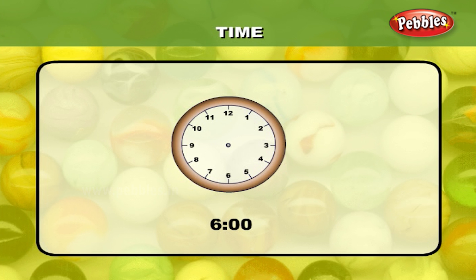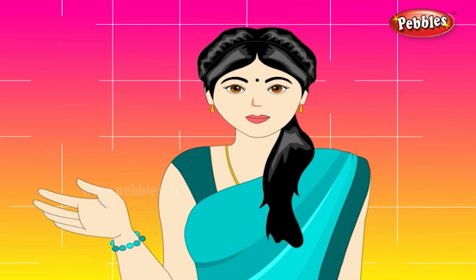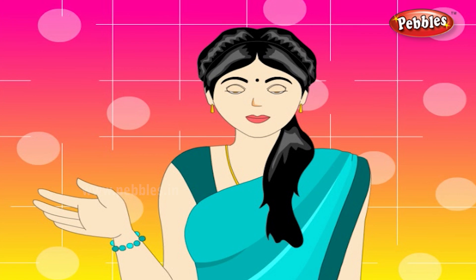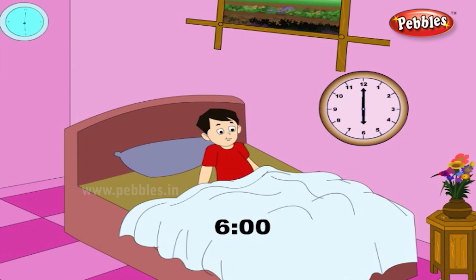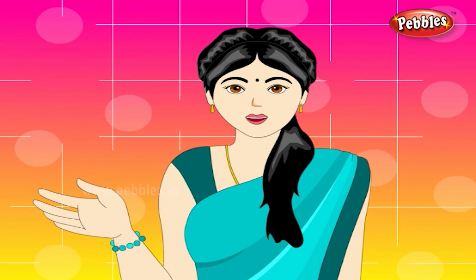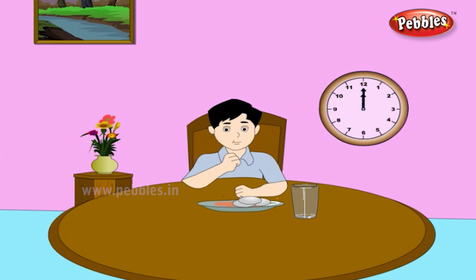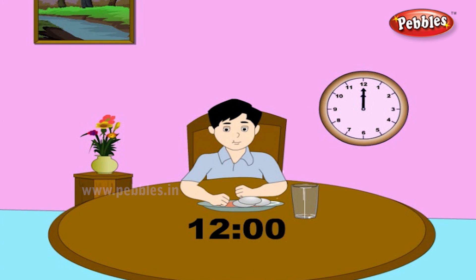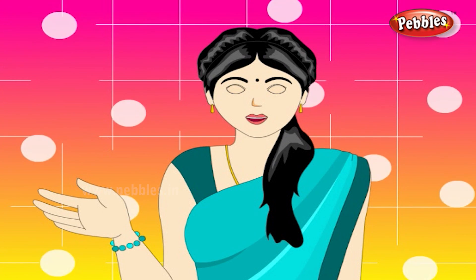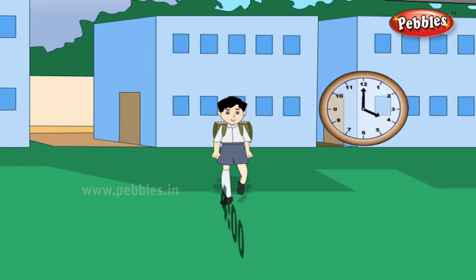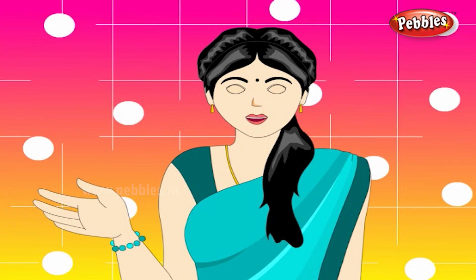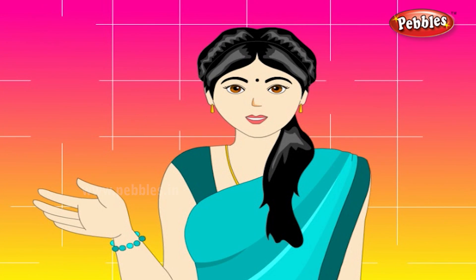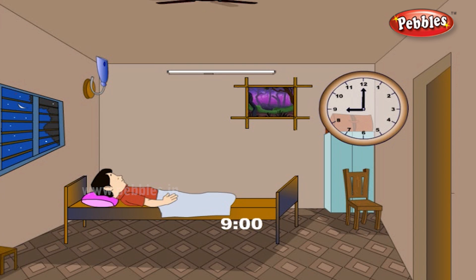For six o'clock, draw the short hand towards six and the long hand towards 12. At what time do we get up in the morning? Six o'clock in the morning. At what time do we eat our lunch? Twelve o'clock in the noon. At what time do we go back home from school? Four o'clock in the evening. At what time do we go to bed? Nine o'clock in the night.